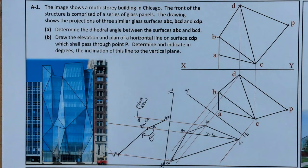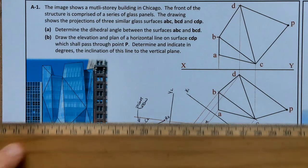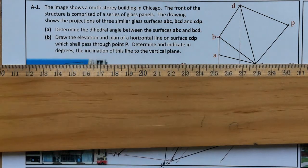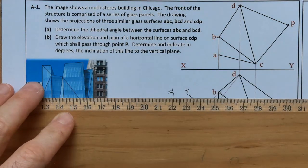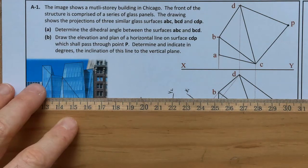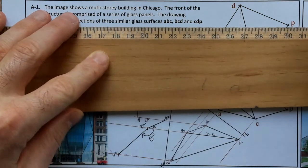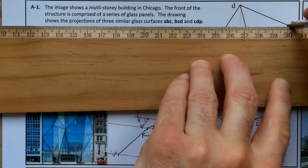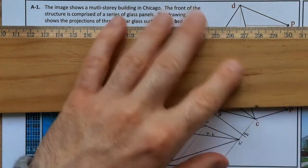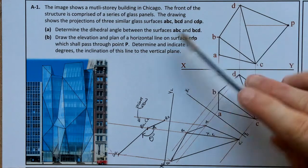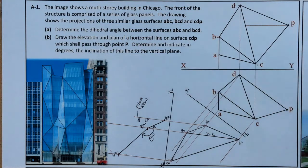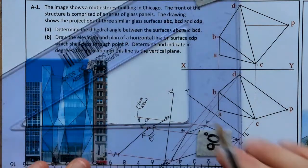In relation to Part B, we're going to draw a horizontal line from P on the surface CDP. A horizontal line from P is parallel to the XY line. Therefore, where it cuts on line DC I can now locate that in my plan. I'll connect that line up and put it in heavy — and do the same down in the plan.